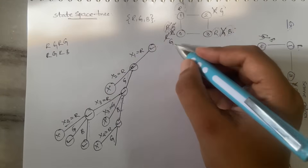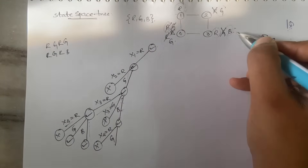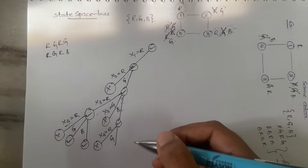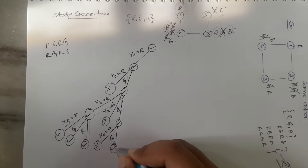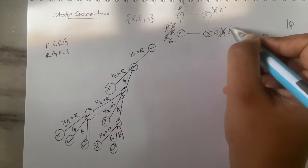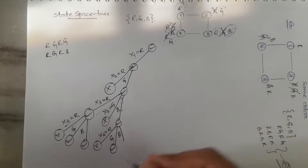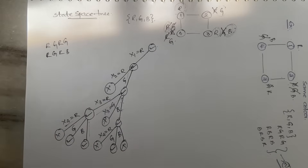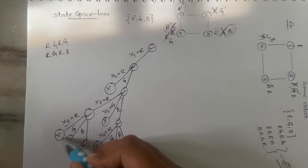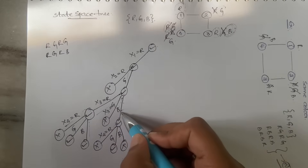x4 = green is accepted because there is no green among x3 or x1 in the adjacent positions. x4 = blue is not accepted because x3 already has blue and they are adjacent. So for this branch all three colors have been checked: R, G, and B.